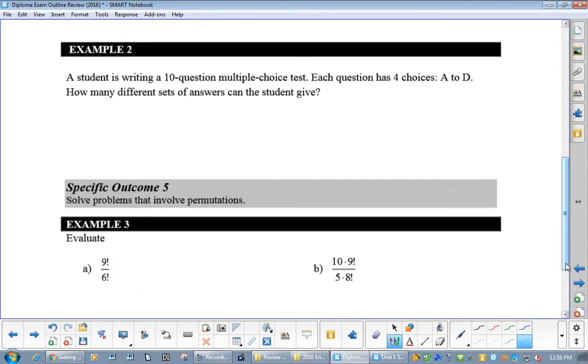Now, a student is writing a 10-question multiple choice. How many choices do you have? So we're going to go 1, 2, 3, 4, 5, 6, 7, 8, 9, 10. How many choices do you have for the first? Four. Does that affect your next choice? No. It's four all the way.